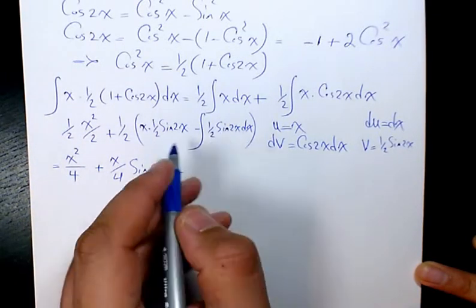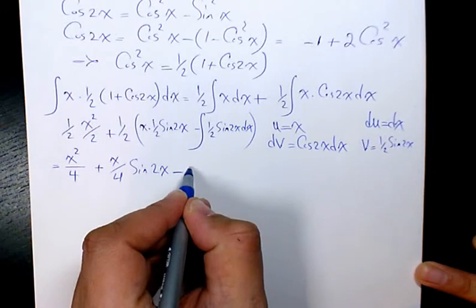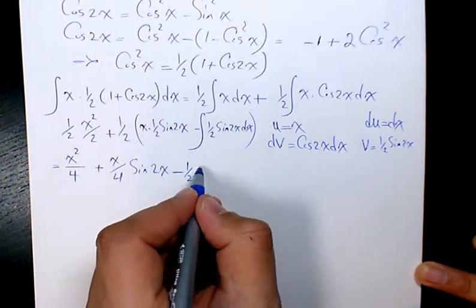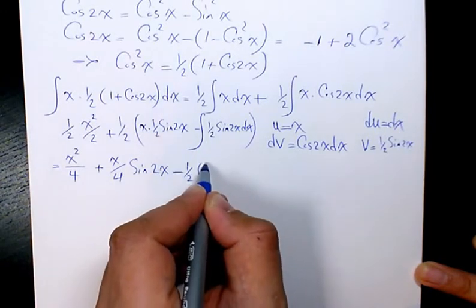And here, the integration of this part is going to be 1 over 2. I take it out and it's going to be 1 over 2 times...